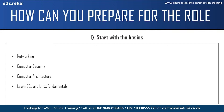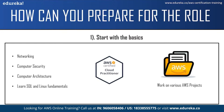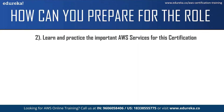Next, I would definitely recommend taking the Cloud Practitioner Certification, as this will give you a fundamental understanding of important cloud concepts. Learning for this certification covers security and compliance, cloud technology, cloud concepts, and billing and pricing, which are very helpful for the Solutions Architect Certification. The next step would be working on AWS projects. Start with easier projects initially and then move on to more difficult ones. You can find good projects on the Amazon Web Services official website. The next step is learning and practicing the important AWS services for the certification.